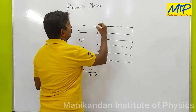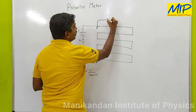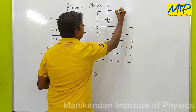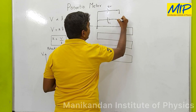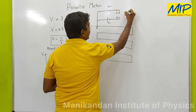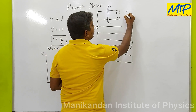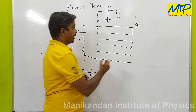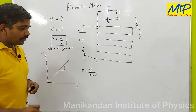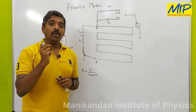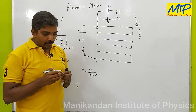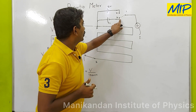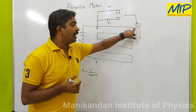Using this potentiometer, I will explain how to compare the EMF of two cells. From point A, I connect a cell of EMF E1, and there is another cell of EMF E2. We have a two-way key with points 1, 2, and 3. From one end of the key, we connect a galvanometer and a jockey J. To find the EMF of cell 1, I connect points 1 and 3, so E1 is connected with the galvanometer.